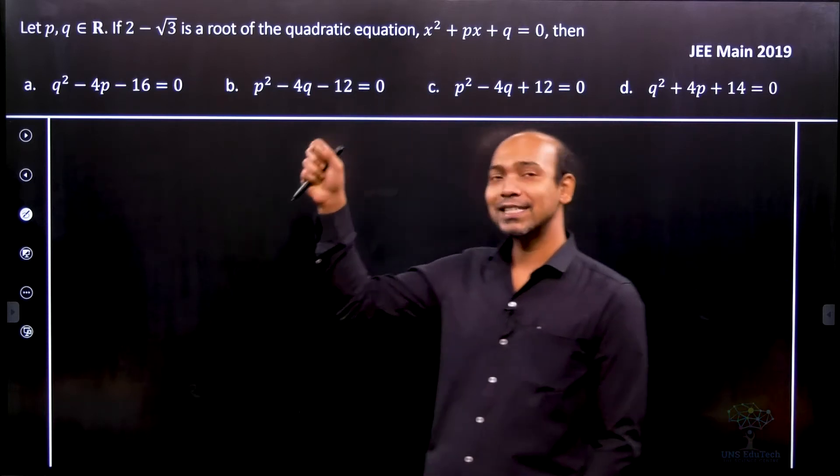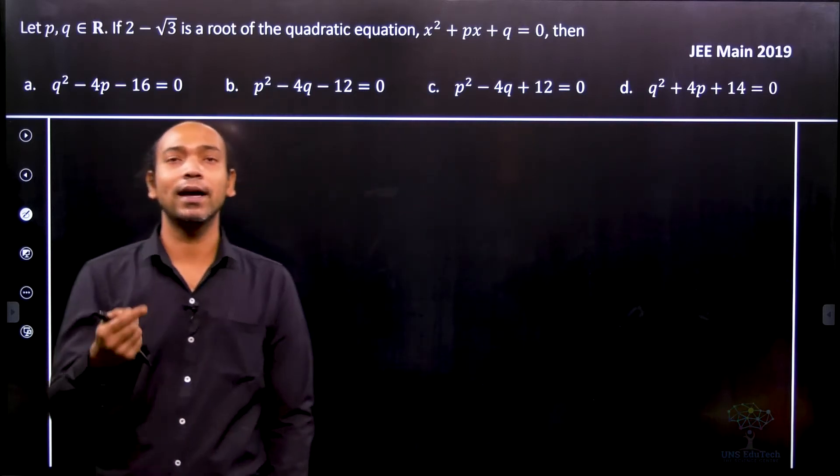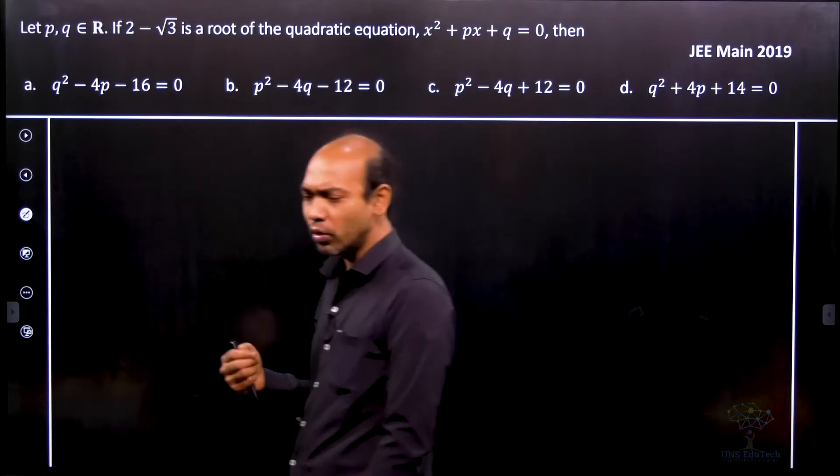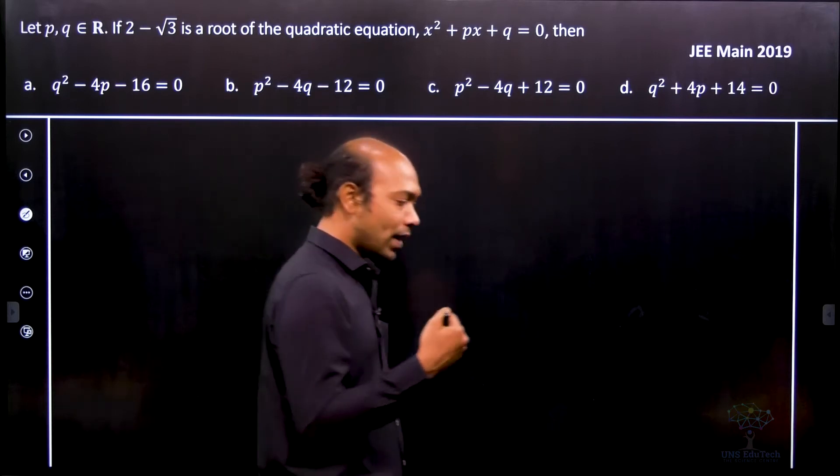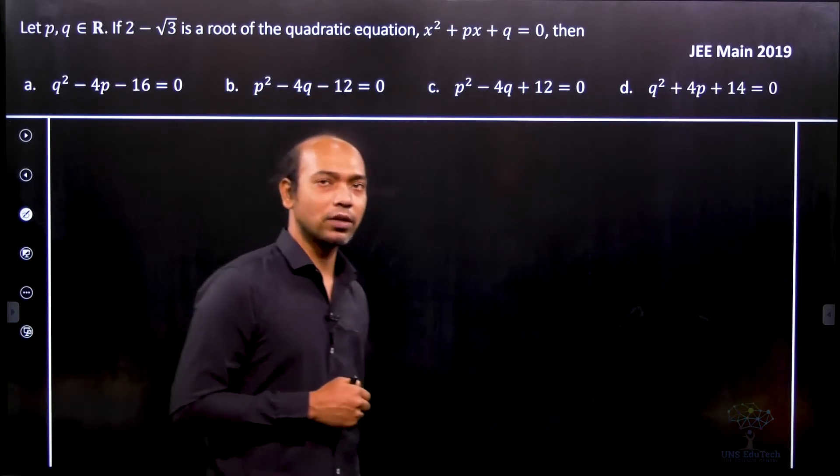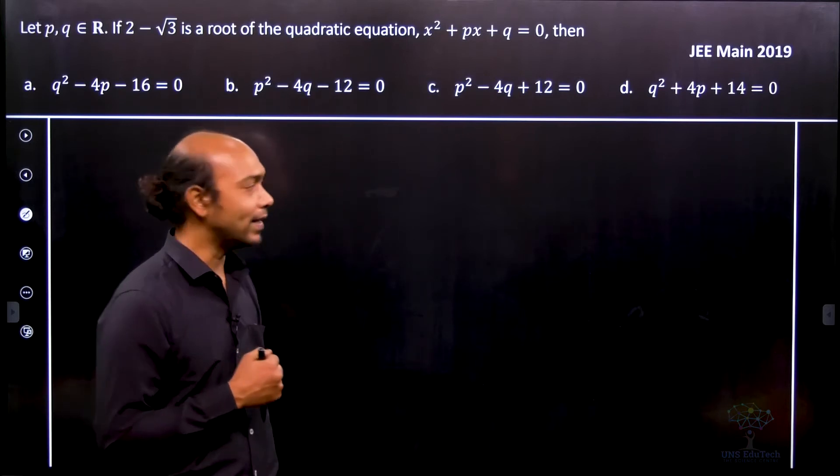For rational irrational cases, if they are real and rational, if 2 minus root 3 is a root, then obviously 2 plus root 3 is also a root of this equation. So that's the concept. So let's apply that.